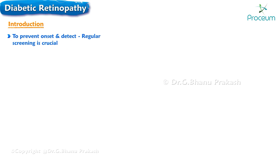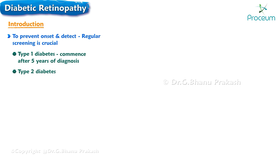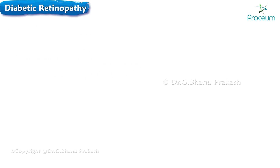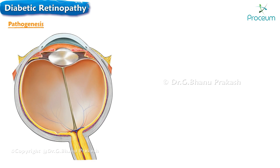To prevent the onset and detect diabetic retinopathy at an early stage, regular screening is crucial. For individuals with type 1 diabetes, screening should commence after 5 years of diagnosis. In type 2 diabetes, screening should be conducted at the time of diagnosis, followed by annual eye examinations each year thereafter.